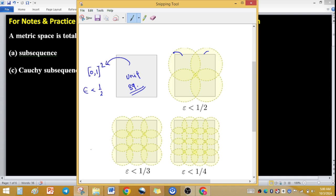If I am using epsilon, let's say 1 upon 3, you will see here this unit square is covered with 9 balls. In this case, you will see here it is covered with 16 balls.